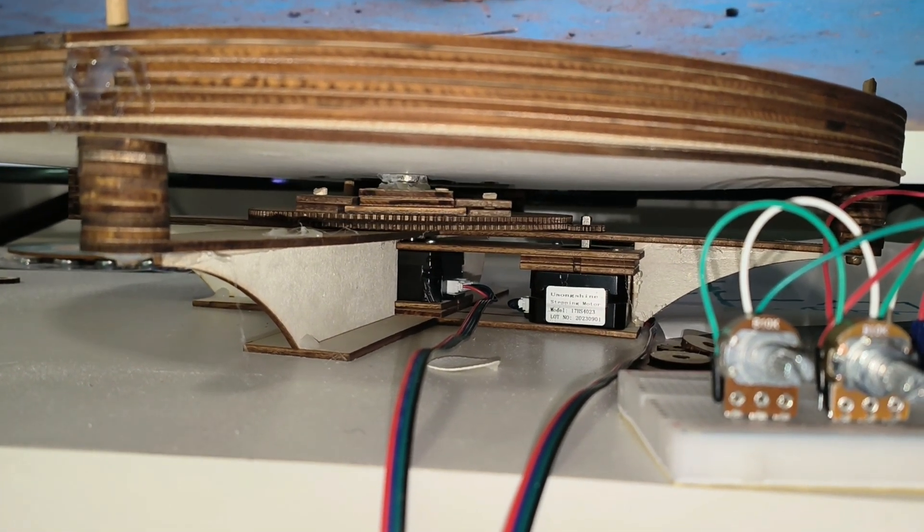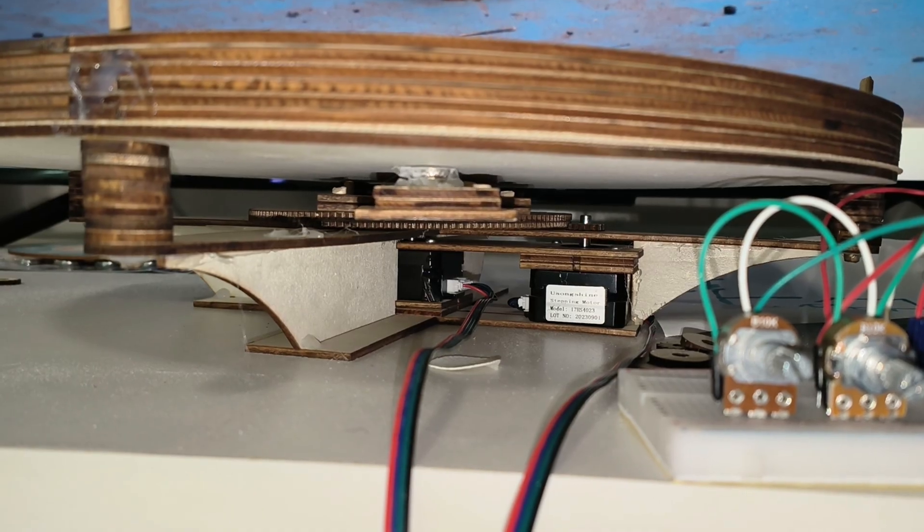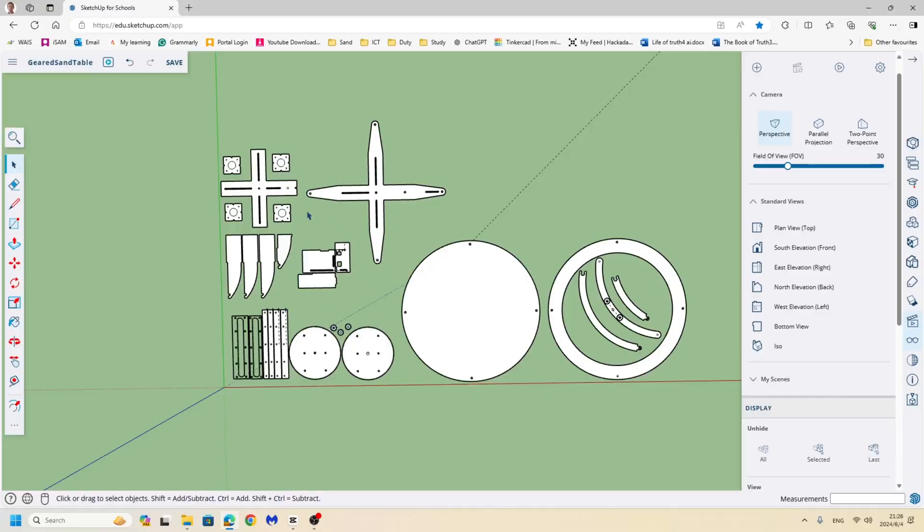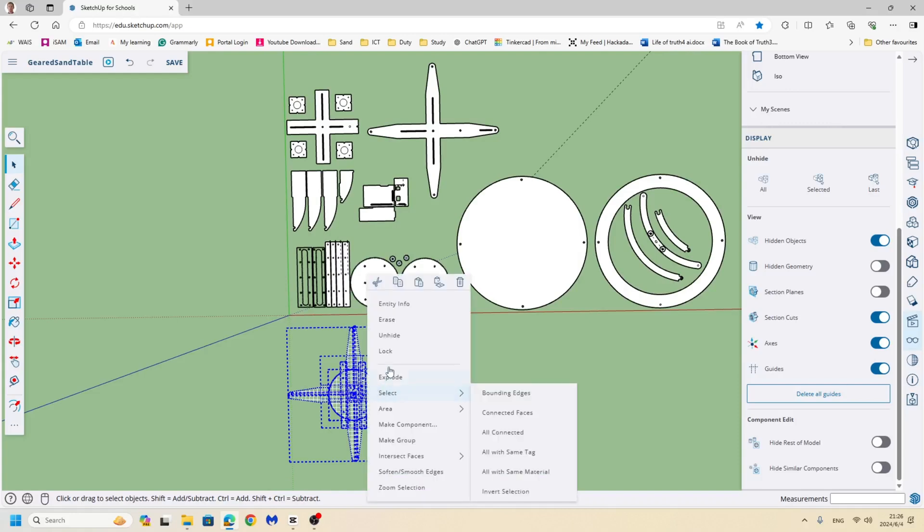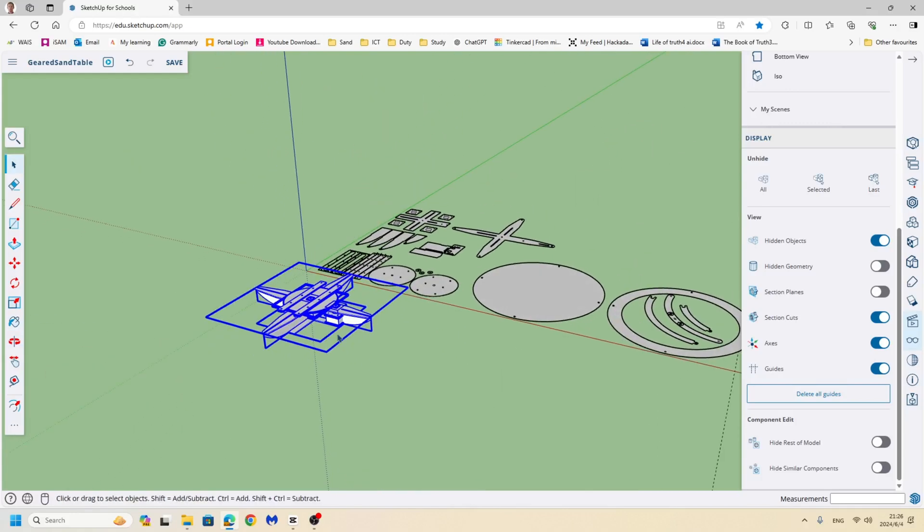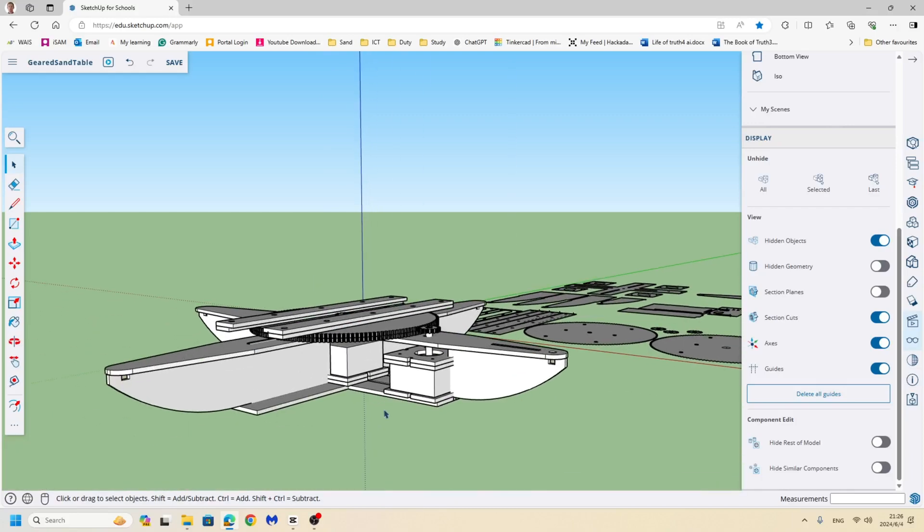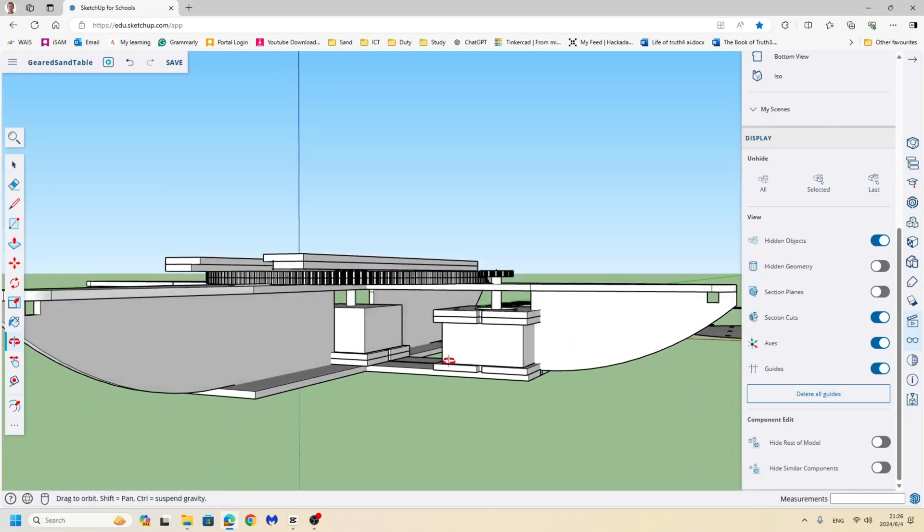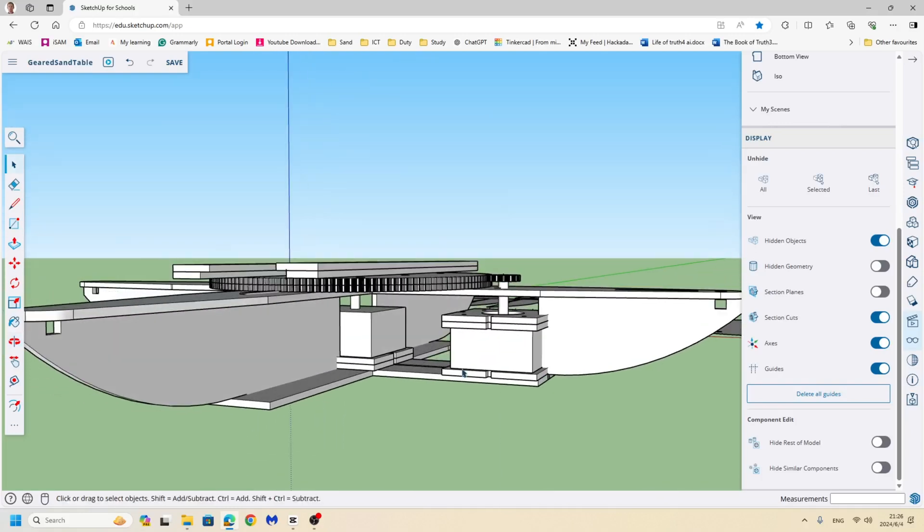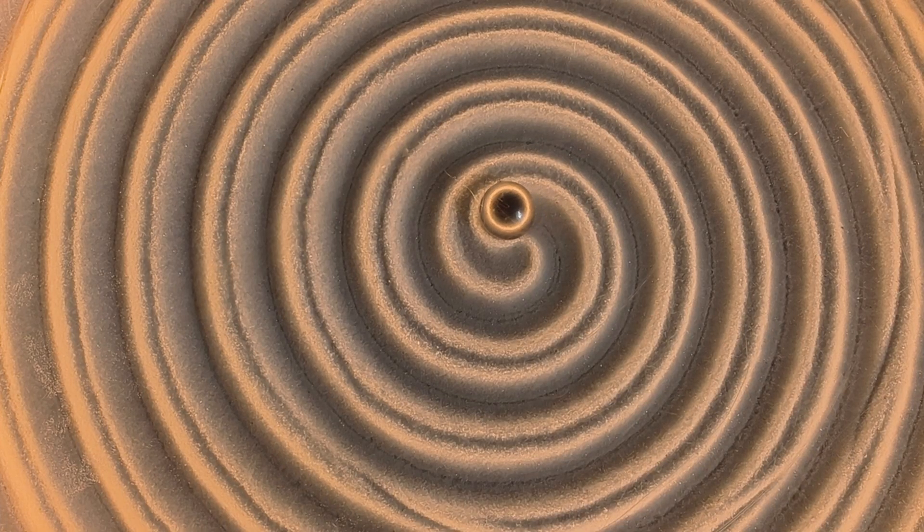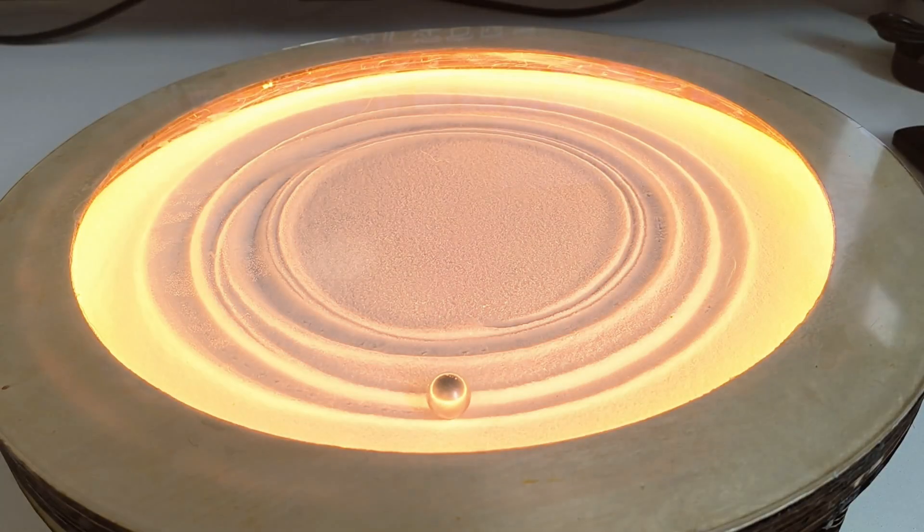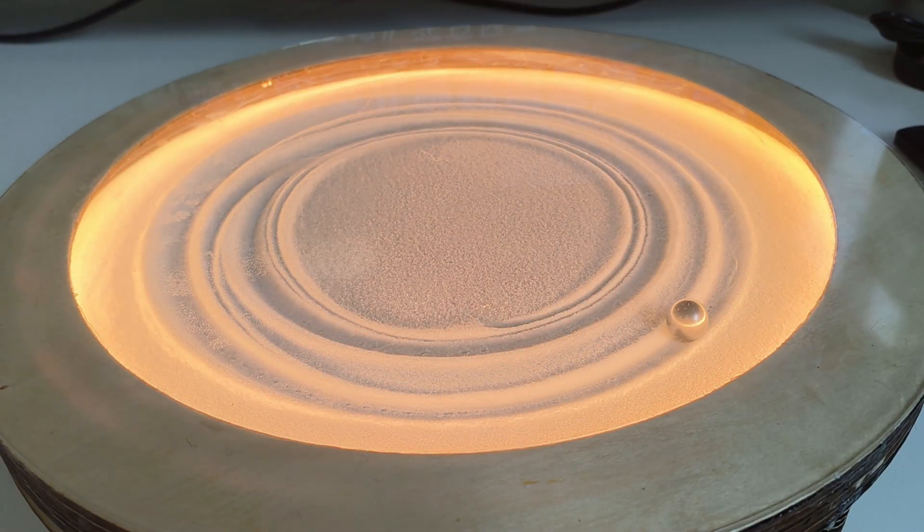I've uploaded the schematics in the comments—you can download them for free and cut them. I've also uploaded the Google Sketchup file because if you look at it, I put the hidden parts there that you can unhide. You can actually see the 3D parts and how I put them together, so you can build your own circular sand table just using wood. I hope this helps, and I have a couple other ideas coming, so I'll see you in the next video.